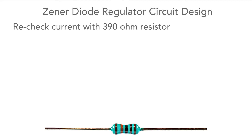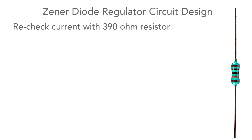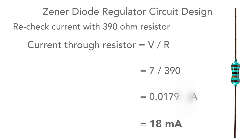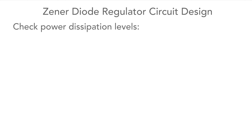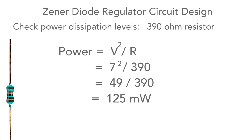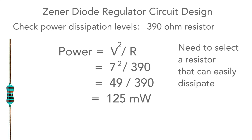Now let's rework the current to make sure everything is going to be all right. The current is V divided by R using Ohm's law: 7 divided by 390, which works out to be 0.0179 or just under 18 milliamps. Next we need to check that the heat dissipation levels are okay. For the resistor, power equals V squared divided by R: 7 squared divided by 390 equals 49 divided by 390, which works out to be 125 milliwatts. So we need to choose a resistor with a dissipation rating of around a quarter or half a watt.